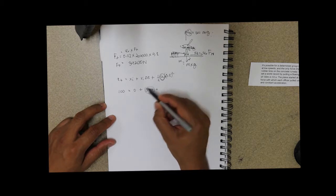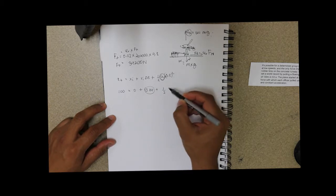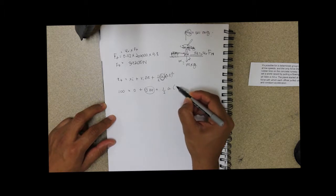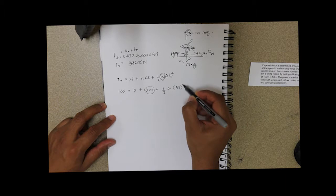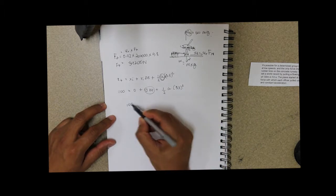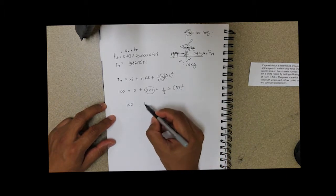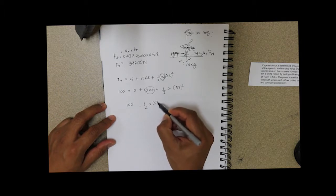So that term will be 0, plus half acceleration is what we need to find out, and the change in time is given to us by 53 seconds, so that's 53 squared. So we have 100 equals half a times 53 squared.